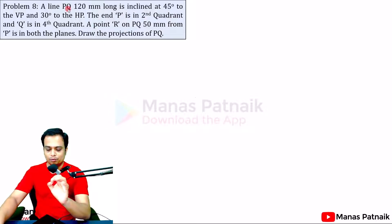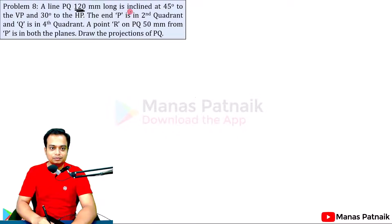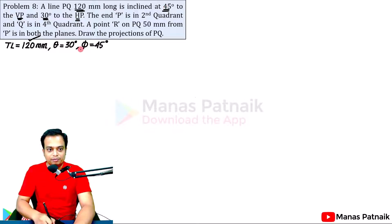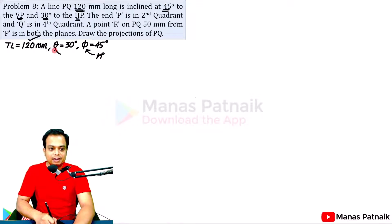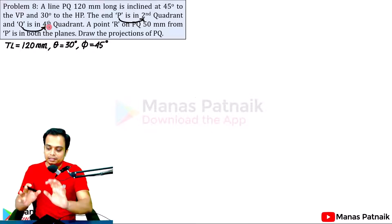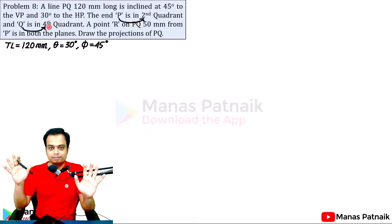A line PQ, 120 millimeters long, is inclined at 45 degrees to the vertical plane and 30 degrees to the horizontal plane. The length of the line is 120 millimeters; the angle with VP is phi — 45 degrees — and the angle made with HP is theta — 30 degrees. The end P of the line is in the second quadrant whereas end Q is in the fourth quadrant, and this is where it starts getting confusing.